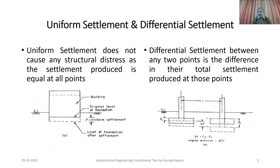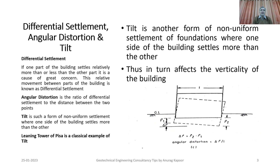p2 minus p1 is the settlement at the location of footing p2 minus the settlement at the location of footing p1. The angular distortion is calculated as delta p divided by l, where l is the distance between the two respective footings p1 and p2. Differential settlement occurs when one part of the building settles relatively more or less than another part, and this relative movement is known as differential settlement. Angular distortion is the ratio of the differential settlement to the distance between the two points.